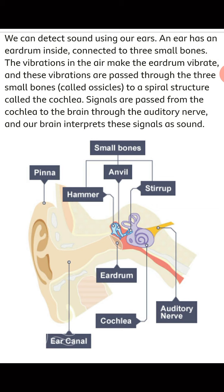Now let's see the parts of the middle ear. The middle ear contains the hammer, the anvil, and the eardrum. When sound is received on the eardrum, it vibrates with the help of the hammer. There is also a snail-shaped structure called the cochlea, and there are small bones surrounding all these parts. The middle ear consists of the eardrum, the hammer, the anvil, the stirrup, the cochlea, and the small bones around them.